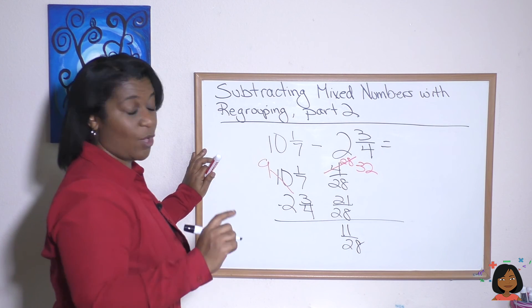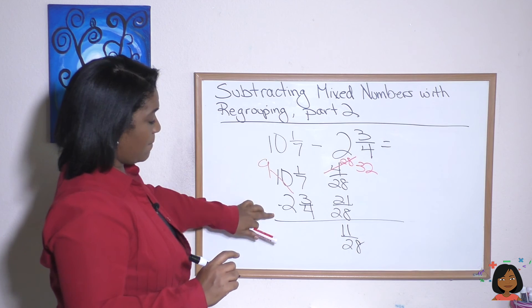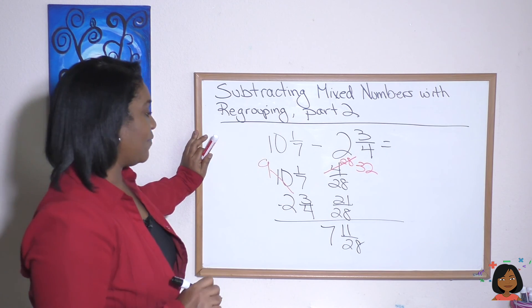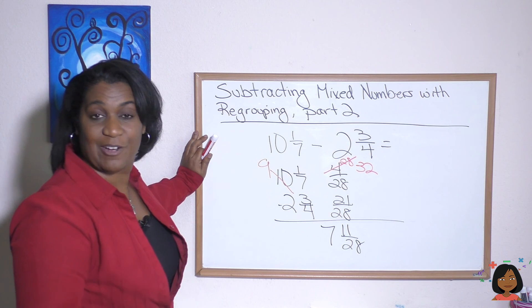Now let's take care of the whole numbers. Nine minus two is seven. Okay. Seven and 11 twenty-eighths is our answer.